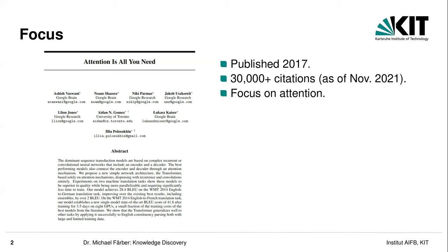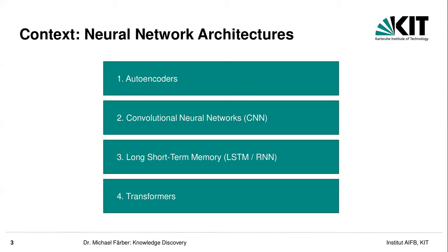To better understand how transformers emerged and how they differ from other neural network architectures, we can have a look at different neural network architectures proposed in the past. Mainly we can mention here the convolutional neural network (CNN), the long short-term memory (LSTM), the bidirectional LSTM (biLSTM), or generally RNNs as kinds of neural network architectures. Then we will go more into the details of actual transformers themselves.